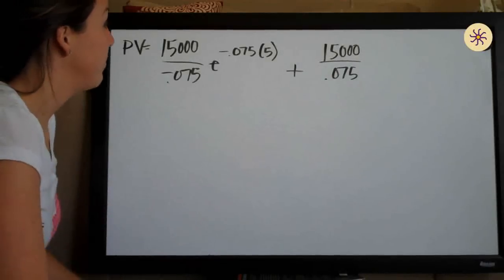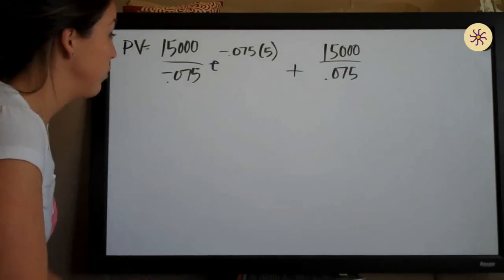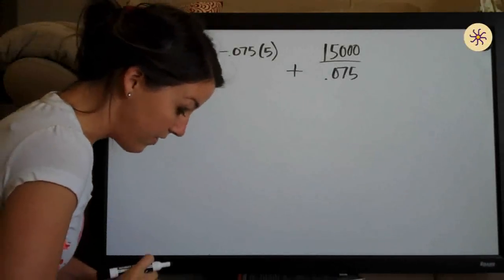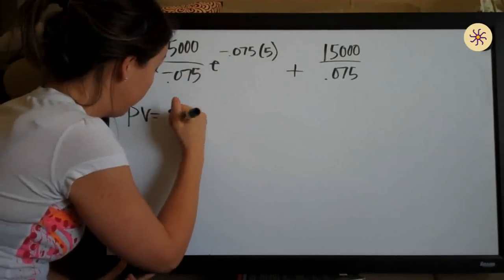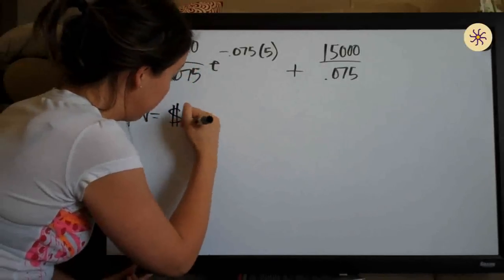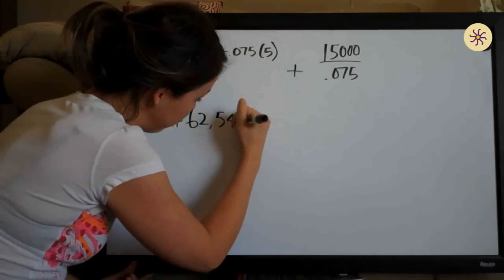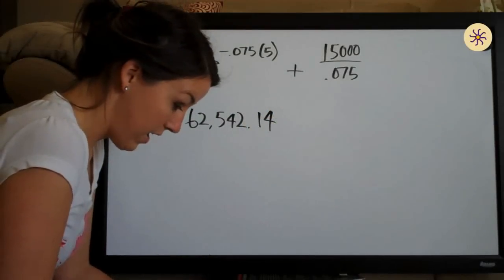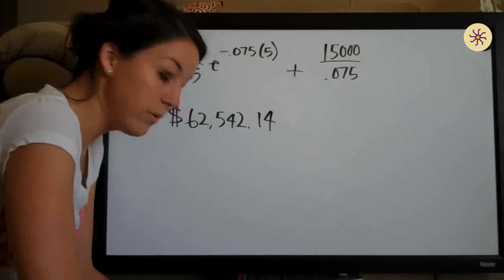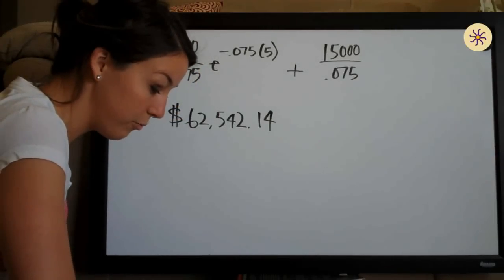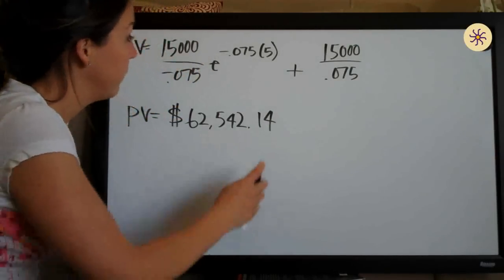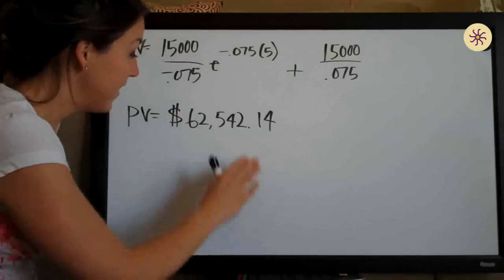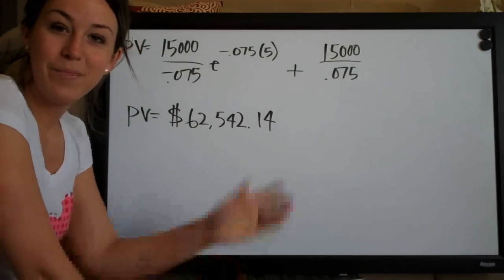The answer we get is that the present value is $62,542.14 — the present value of a constant continuous income stream of $15,000 per year deposited for five years at an interest rate of 7.5%. So that's it, there's our answer. Hope that helped, see you guys next time. Bye!